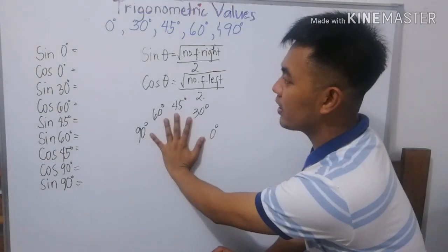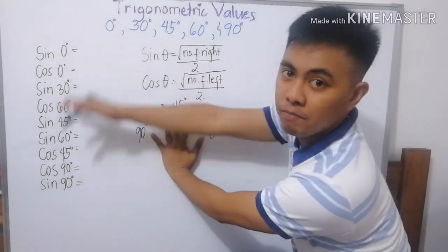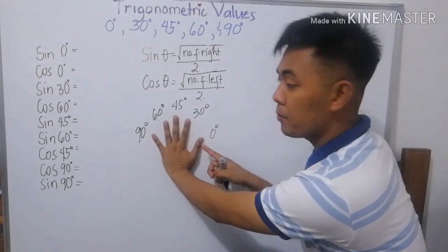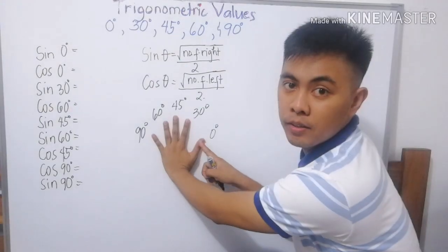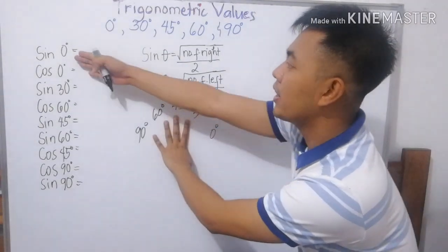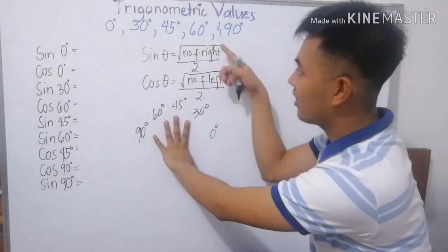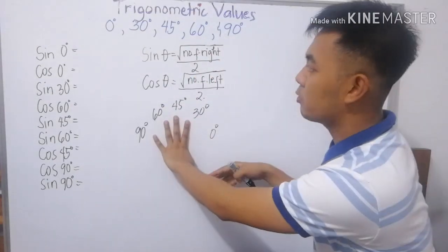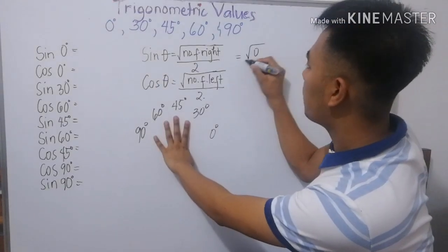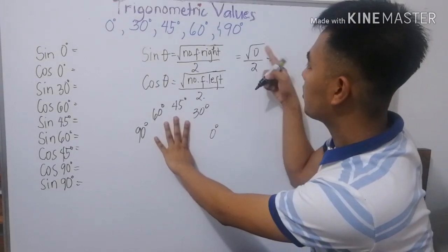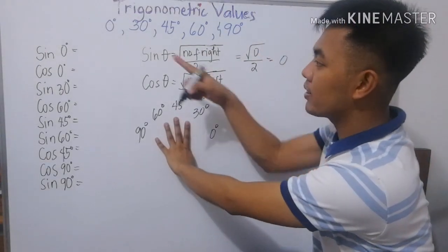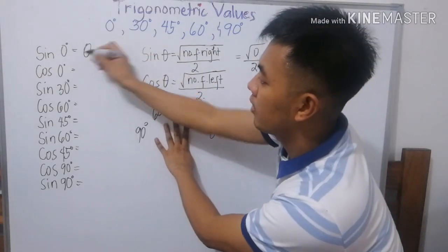Okay. So, para mas maintindihan, try natin ito. So, sine 0. Pag sine 0, itong 0, tupiin mo. Dahil sine ang hinahanap, ilan ang natin ang fingers sa kanan. Number of fingers in the right. So, wala. Ibig sabihin, that is the square root of 0 over 2. Square root of 0, 0 divided by 2, 0. Ibig sabihin, ang sine 0 ay 0.